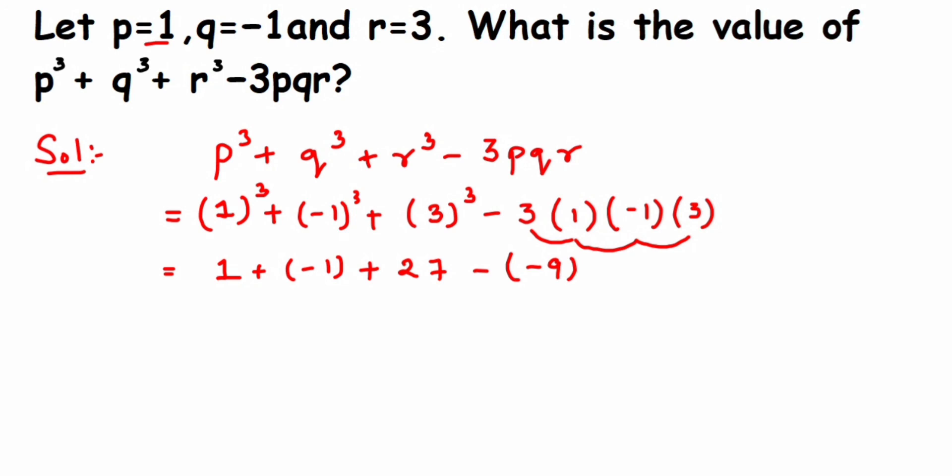Then 27, now minus into minus 9 is plus 9, so it will be plus 9. So 27 plus 9 is 36. The answer here will be 36.